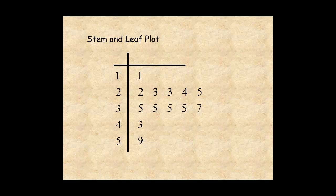It shows how the data is spread out, that is, the lowest number, the highest number, the most common number, the mode of the data, and possible outliers.